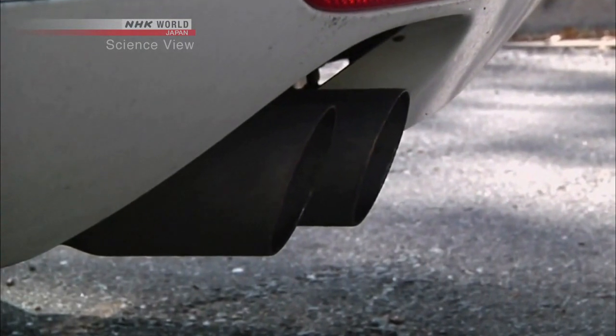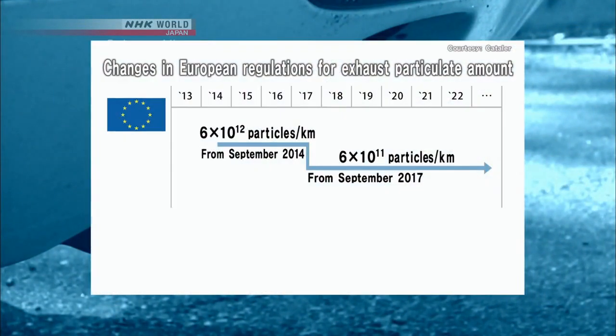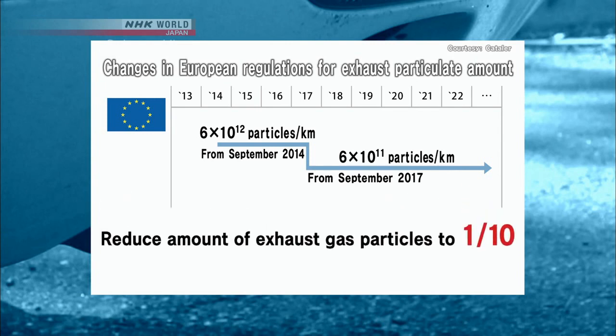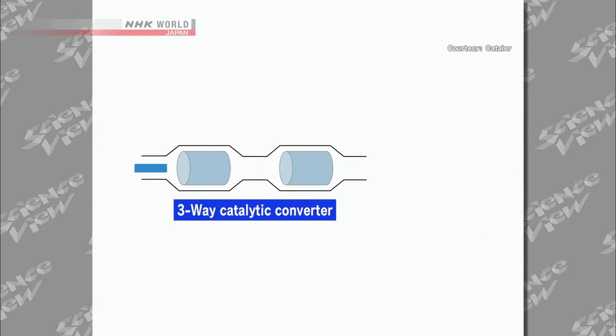But the problem was not only about nitrogen oxide. They had to meet the requirement of exhaust gas regulations, called Euro 6 emission standard. The new regulation will require the particles emitted from the exhaust gas to be one-tenth the conventional level, going into effect from September 2017. To overcome this task, the cars which normally used two catalytic converters now needed another filter.